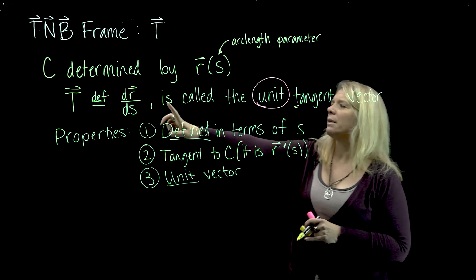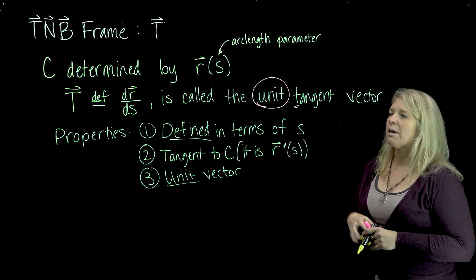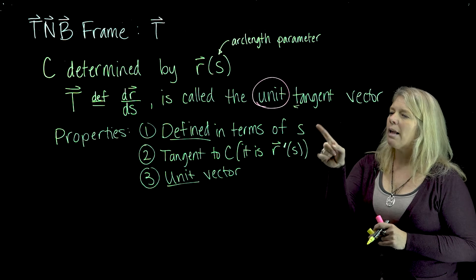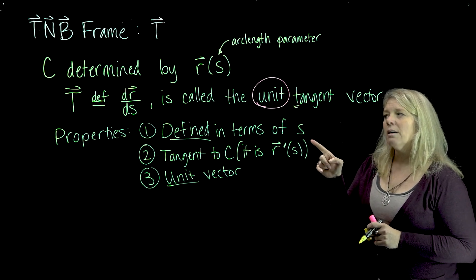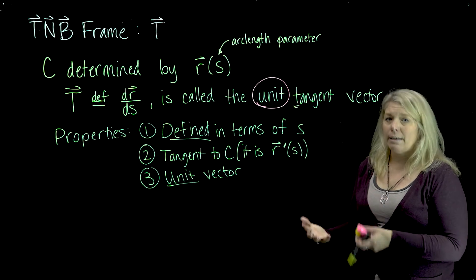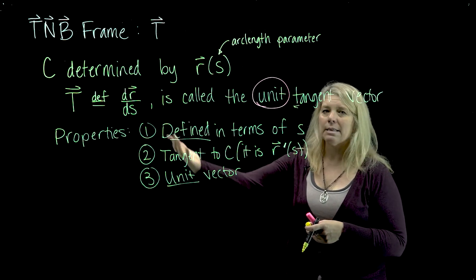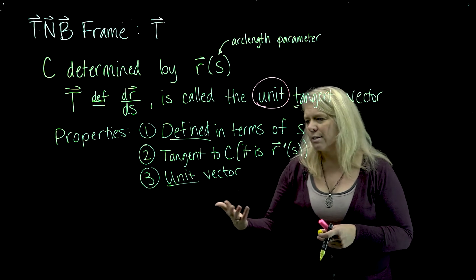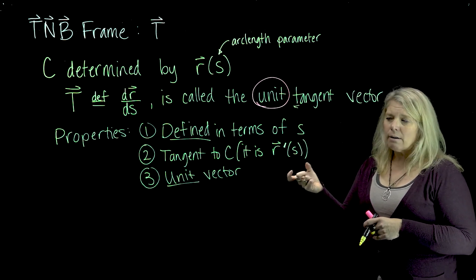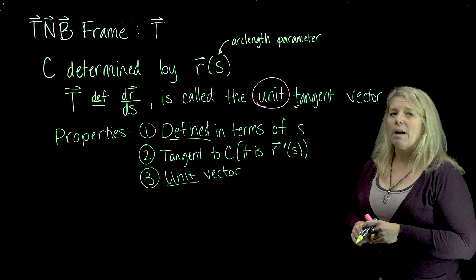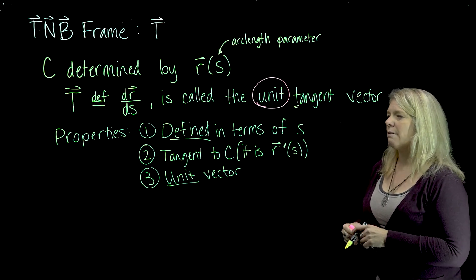It's not immediately obvious from just looking at this definition that it's going to be a unit vector, so I want to talk about how we know that. When I justify that, something else nice will fall out — we talked about not wanting to work with arc length parameterizations if we don't have to, as they are messy. Although T is defined in terms of S, I'd like to find a shortcut formula for calculating this T vector so I don't actually have to find the arc length parameterization in order to find T.